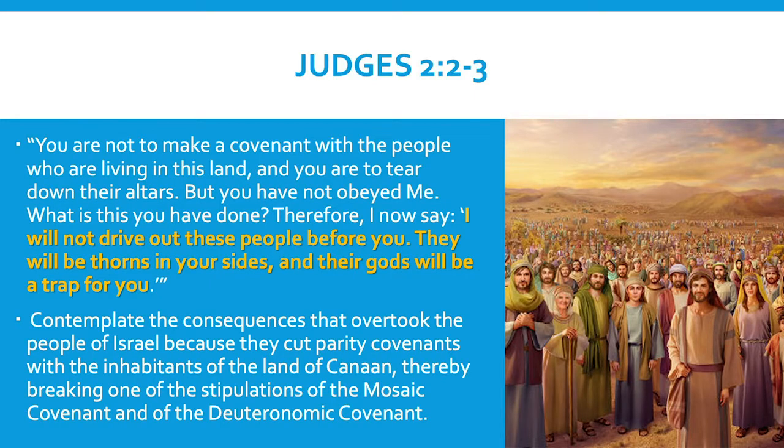We celebrate that in this lesson — the parity treaty giving way to a suzerainty vassal treaty. Now, in the book of Judges, the people of Israel continued to make parity treaties with their neighbors. They didn't learn from what had happened with the Gibeonites. Instead they continued, and as it says in Judges 2, verses 2 and 3, the word from the Lord: 'You are not to make a covenant with the people living in this land, and you are to tear down their altars, but you have not obeyed me. What is this you have done? Therefore I now say, I will not drive out these people before you. They will be thorns in your sides, and their gods will be a trap for you.'